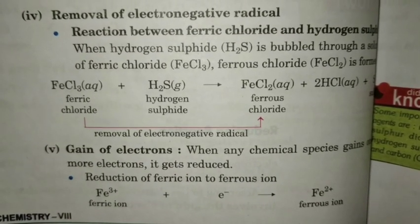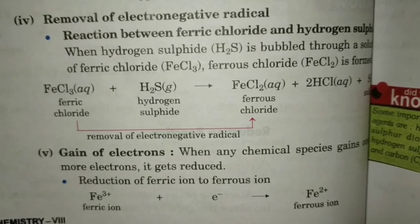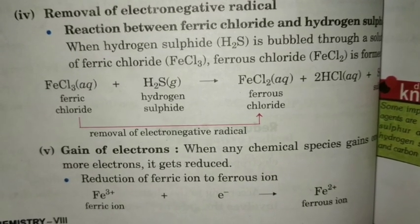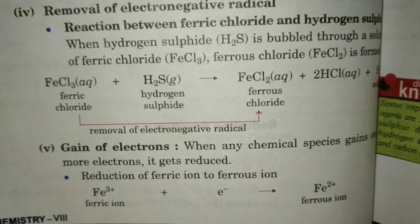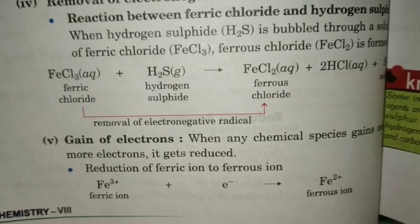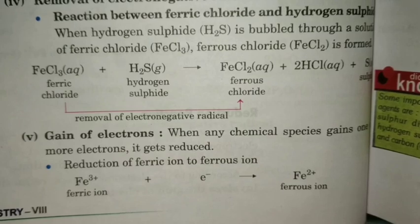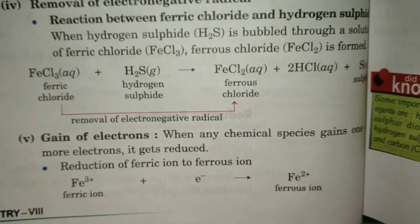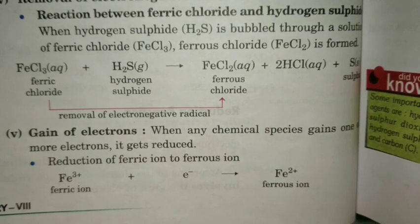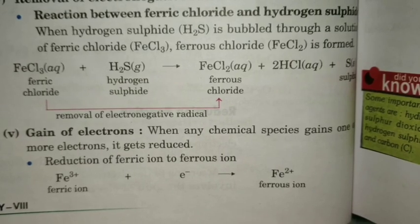Removal of electronegative radical is also reduction. FeCl3 plus H2S gives FeCl2 plus HCl plus S. From FeCl3 to FeCl2, removal of electronegative radical takes place — one Cl minus is removed — so reduction happens, meaning FeCl3 is reduced to FeCl2. Oxidation also takes place here — H2S changes to S, and removal of hydrogen means oxidation occurs. So if one compound is getting oxidized, the other is getting reduced.